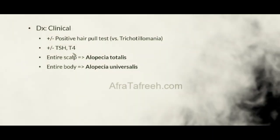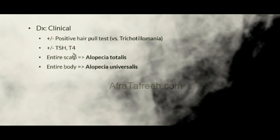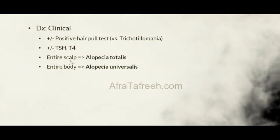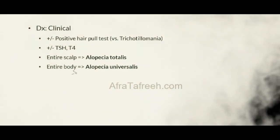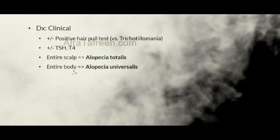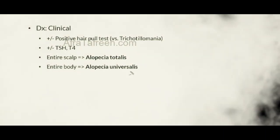In terms of nomenclature, if the entire scalp is involved, the patient is deemed to have alopecia totalis. In contrast, if the entire body is involved, the condition is more specifically called alopecia universalis.